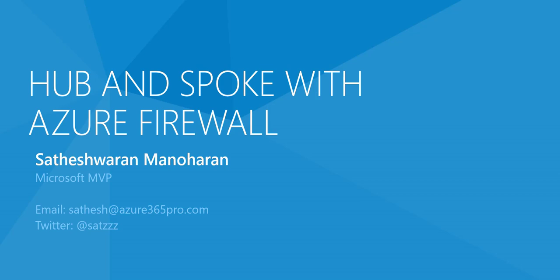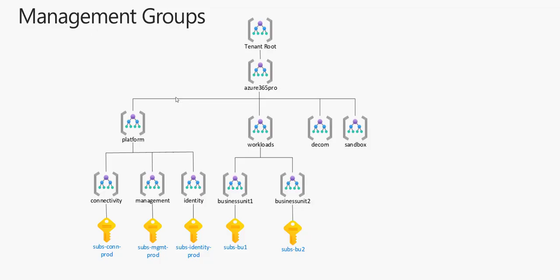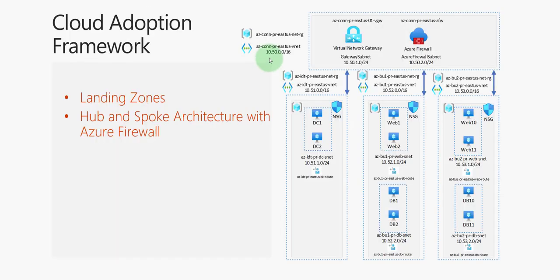Hi, I'm Satish, Microsoft MVP. In this video we'll be talking about hub-and-spoke Azure Firewall. In the last video we covered Azure management groups and subscriptions and how to plan them properly in a hub-and-spoke model — please check that video first, link is in the description. In this video we'll be creating the hub resource group, populating the main networking components, the VNet gateway, and Azure Firewall, and creating the landing zones and landing zone resource groups. In this scenario we have two business units, BU1 and BU2, which will have their own resource groups.